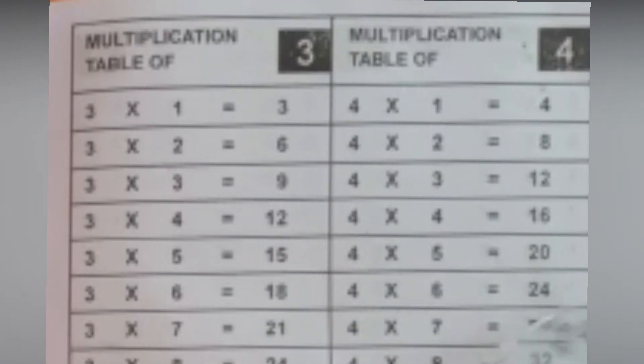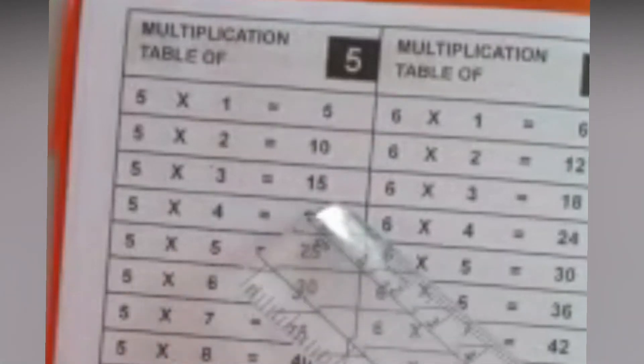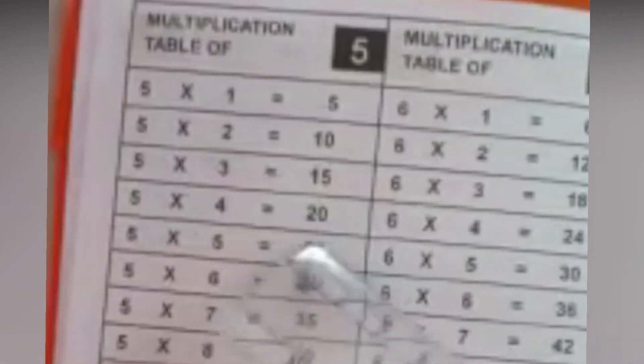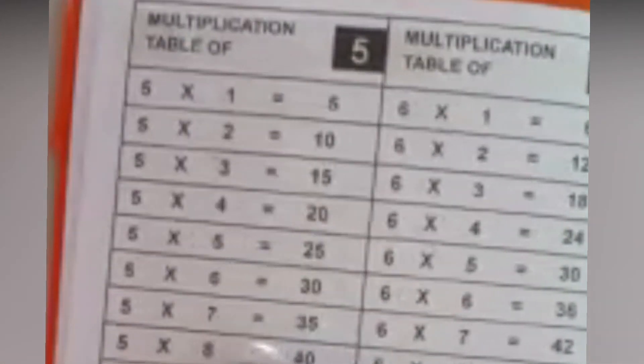Now let us learn multiplication table of 5: 5 ones are 5, 5 twos are 10, 5 threes are 15, 5 fours are 20, 5 fives are 25, 5 sixes are 30, 5 sevens are 35, 5 eights are 40, 5 nines are 45, 5 tens are 50.